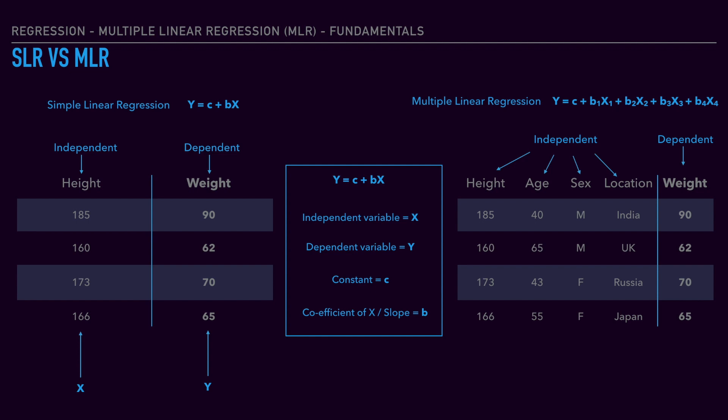We need to predict the weight of a person — that is the dependent variable. Due to multiple independent variables, our formula gets extended as y equals c plus b1 of x1 plus b2 of x2 plus b3 of x3, and so on. We map the variables: x1 as height, x2 as age, x3 as sex, and x4 as location. This is how the formula gets mapped with the dataset.